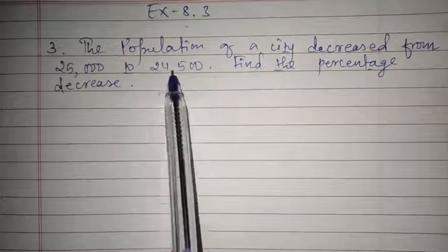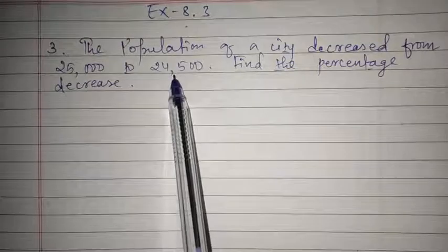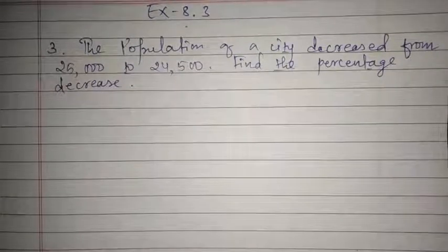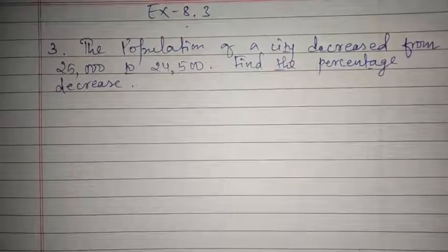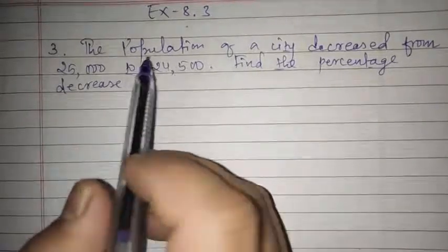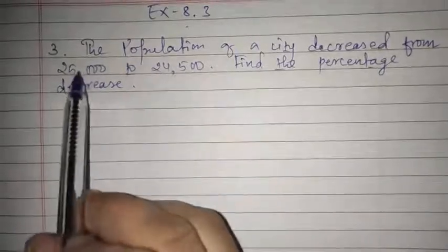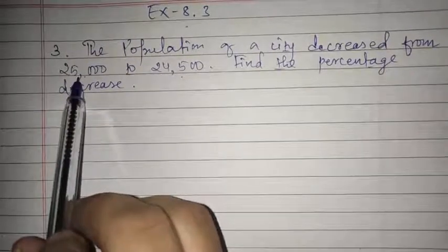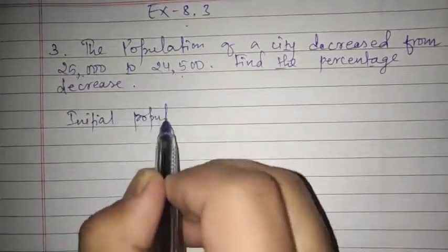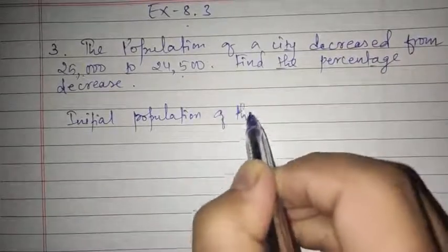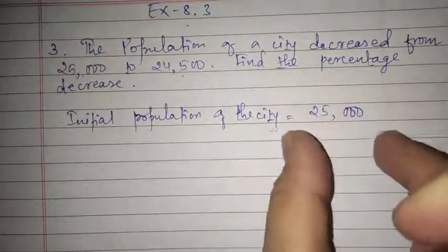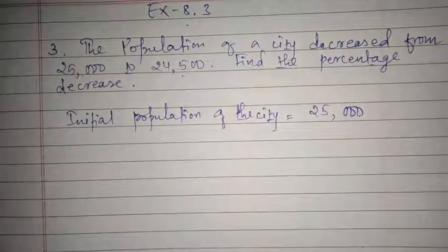The population is getting decreased from 25,000 to 24,500. The question asks us to find the percentage of decrease. It is very easy — everything is given, you just have to use your brain and solve it. The initial population of the city is equal to 25,000.